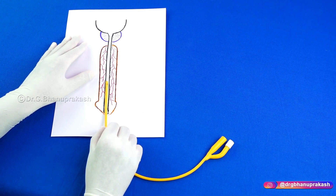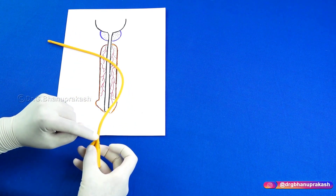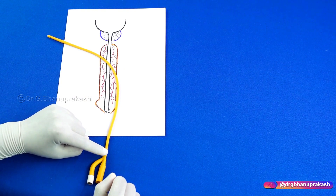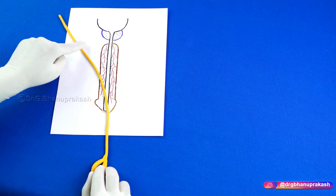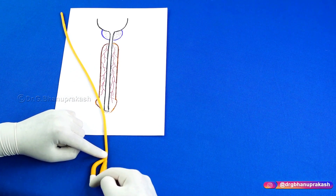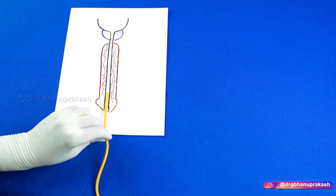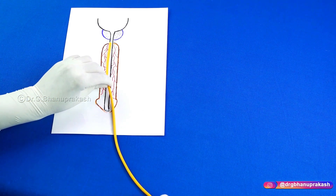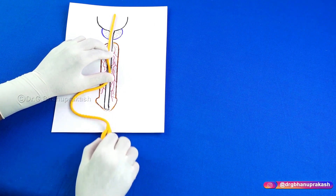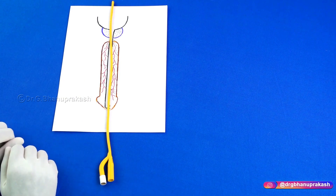A very important point is knowing how far to insert the catheter. In males, you have to insert the Foley's catheter till the Y-junction — meaning the entire length of the Foley's should be within the body and only the Y-junction part should lie outside. So you slowly insert the Foley's catheter all the way in until the Y-junction is reached.